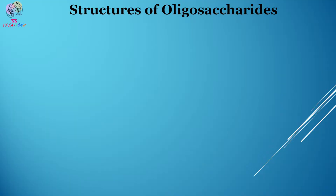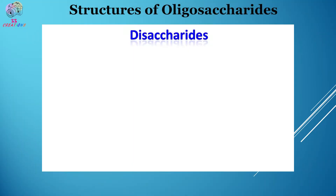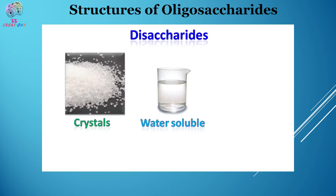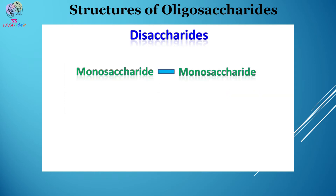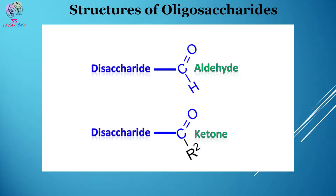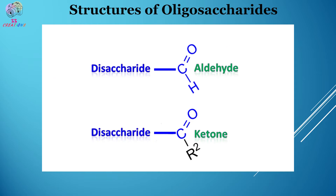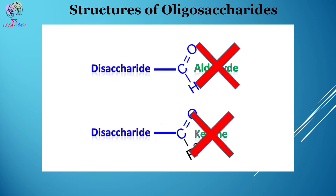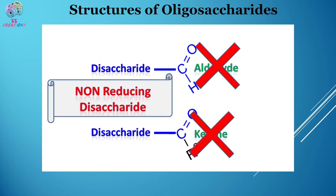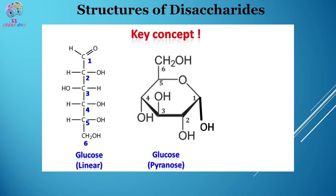Now let's look at the structures of oligosaccharides. Disaccharides are the most common oligosaccharides, which are crystalline, water-soluble, and sweet in taste. Disaccharides consist of two monosaccharide units linked together by a glycosidic bond. Have you heard of reducing and non-reducing properties of disaccharides? If the disaccharide has a free aldehyde or ketone group, then it is known as a reducing disaccharide. If it does not have a free aldehyde or ketone group, then it is known as a non-reducing disaccharide. As far as the structure of disaccharides is concerned, they are represented by pyranose or furanose form.